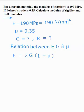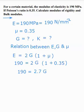So put all this value here. So it is 190 into 2G, it is unknown, in bracket 1 plus mu, it is 0.35, bracket close. So here unknown only it is G. From this relation, it will get G. So 190 is equal to 2 in bracket 1 plus 0.35, it will get 2.7G. So G is equal to 70.370 Newton per mm squared.